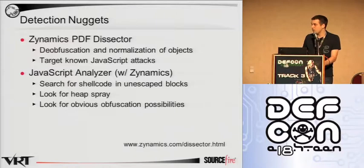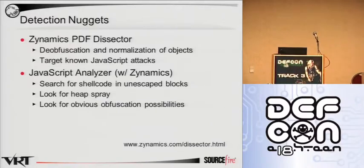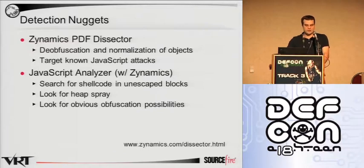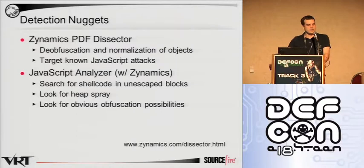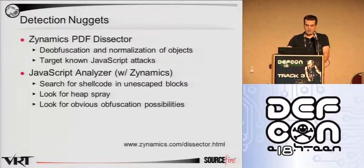Here's an example of a third-party piece of software that we've integrated: Dynamics PDF Dissector. This is a great tool that we've been using to break down our PDFs. It's able to report known vulnerabilities, understand and decode obfuscated and potentially malicious JavaScript, and extract exploit shellcode for further analysis.